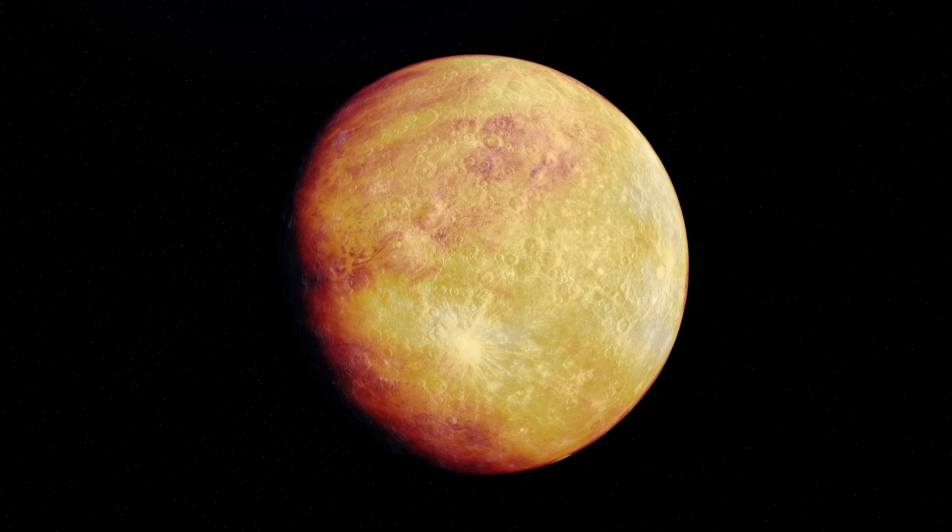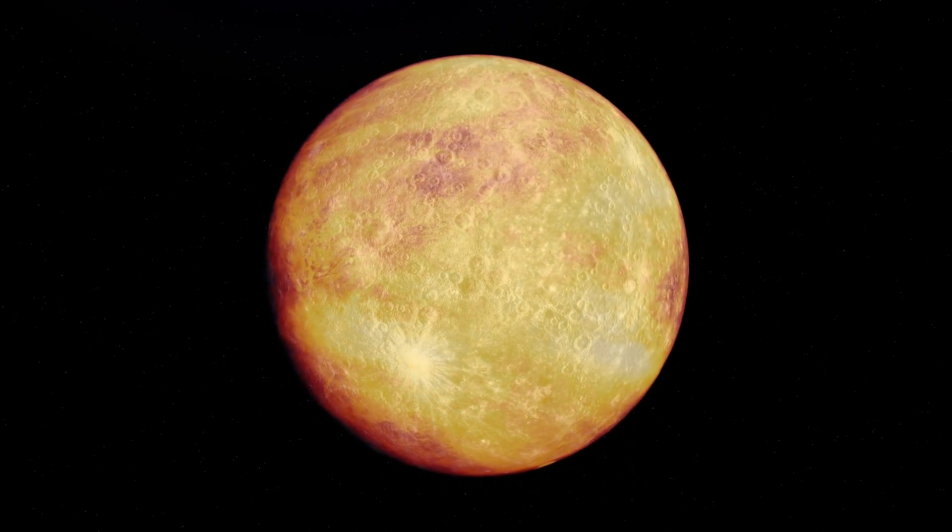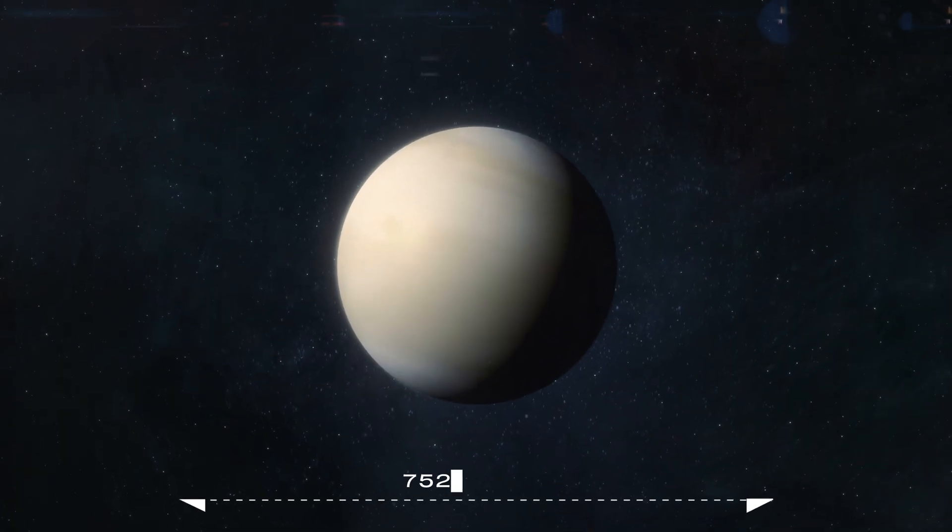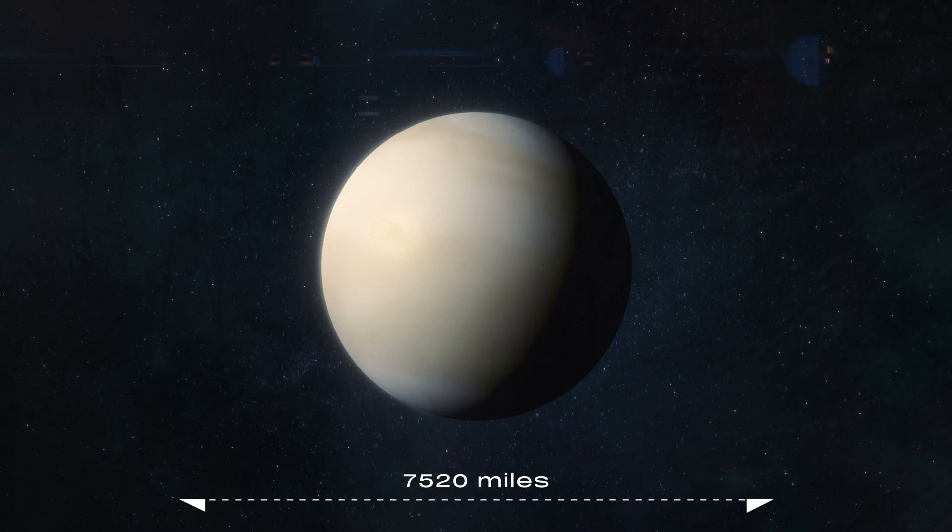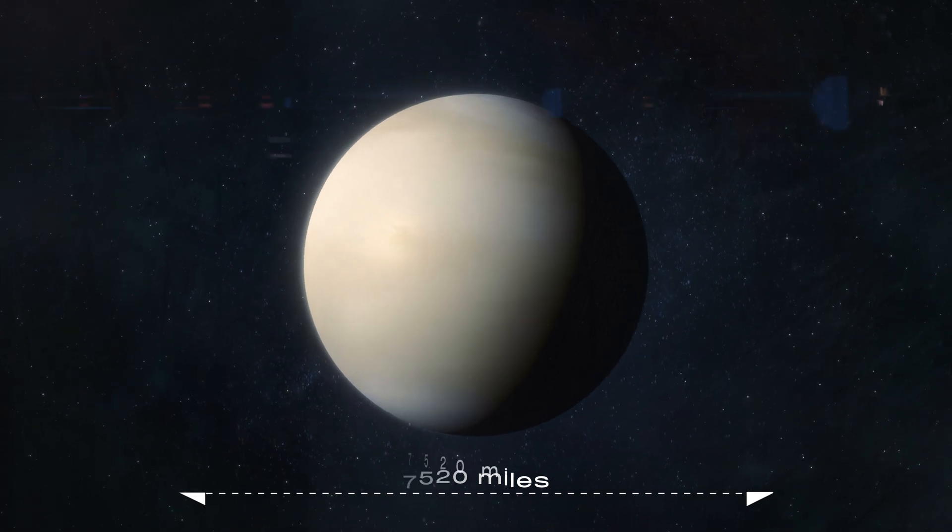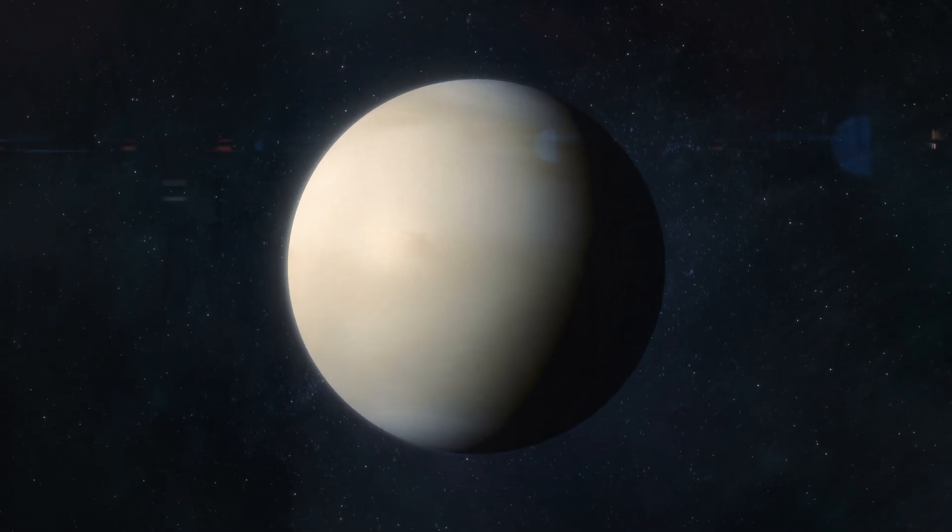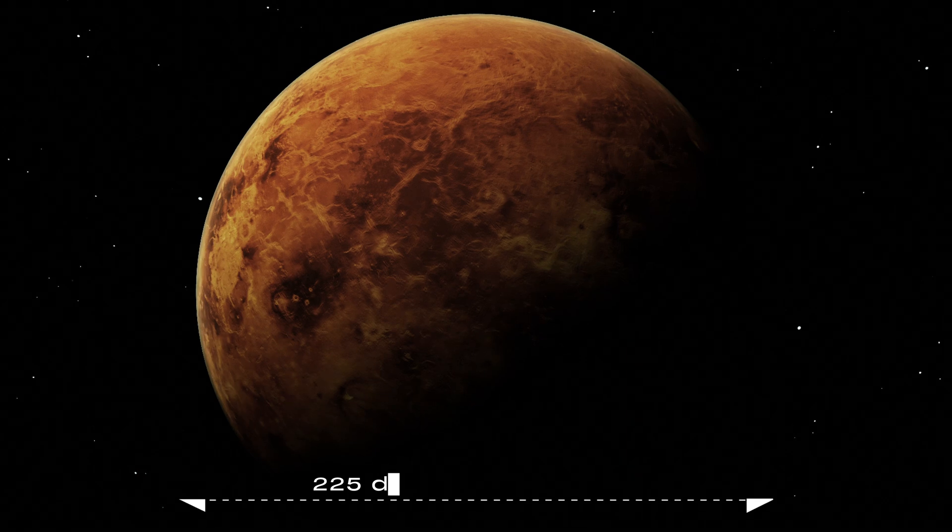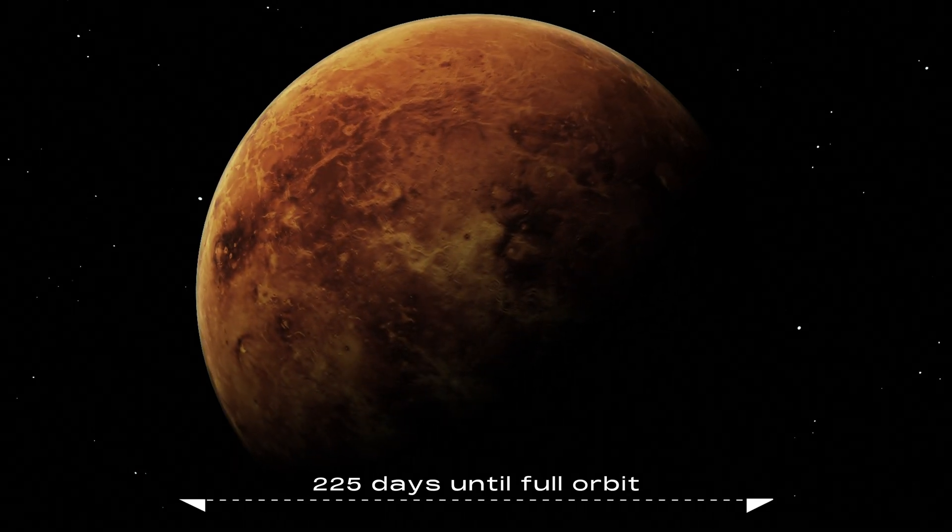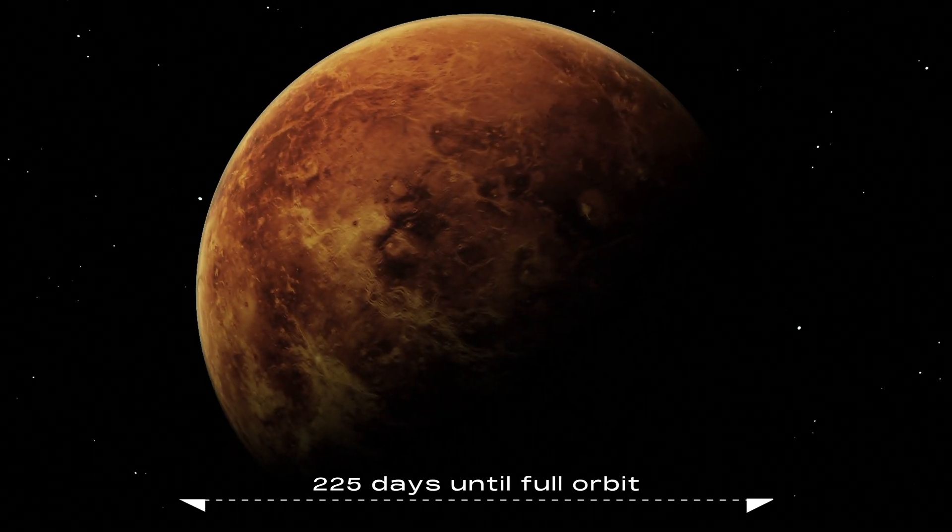However, the conditions on Venus are vastly different from those on Earth. Venus has a diameter of about 7,520 miles, making it slightly smaller than Earth, and it takes about 225 Earth days to complete one orbit around the Sun.